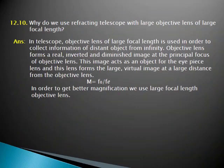Question 12.10: Why do we use a reflecting telescope with an objective lens of large focal length? In a telescope, an objective lens of large focal length is used in order to collect information from distant objects. We use the objective lens with a large focal length for this purpose. The objective lens forms a real, inverted, and diminished image.